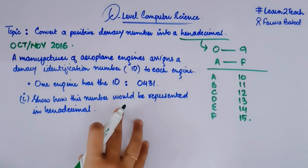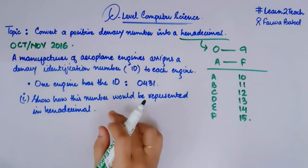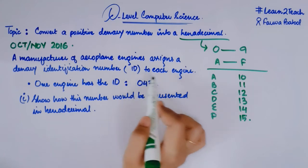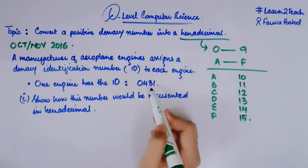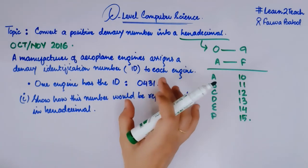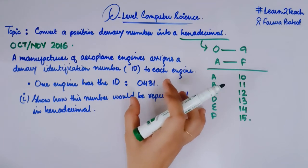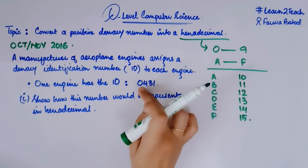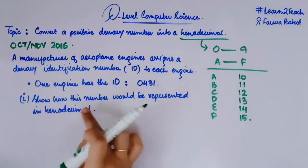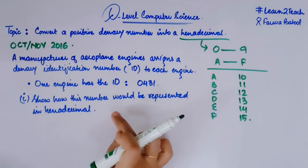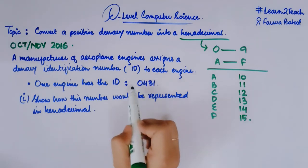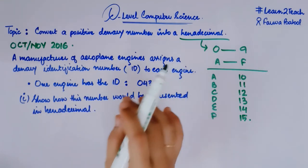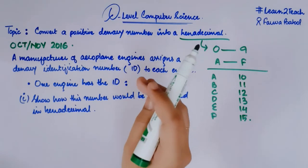This is the example of past paper, October, November 2016. A manufacturer of aeroplane engines assigns a denary identification number ID to each engine. One engine has the ID 0431. So here we have a manufacturer of aeroplane engines and he assigns an ID to each engine. One of the engine ID has been shared with us, that is 0431. Now show how this number would be represented in a hexadecimal one. It's a denary identification number and we need to convert it into hexadecimal. Nothing difficult. We just need to revise the steps that I have already taught you.